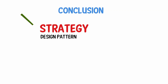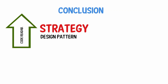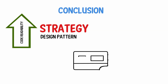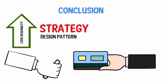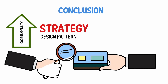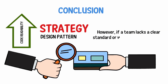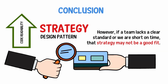In conclusion, strategy is a design pattern that improves code readability. For example, it is easier to check accepted card standards by looking at file names than it is to search somewhere in a large file. However, if a team lacks a clear standard or we are short on time, that strategy may not be a good fit.